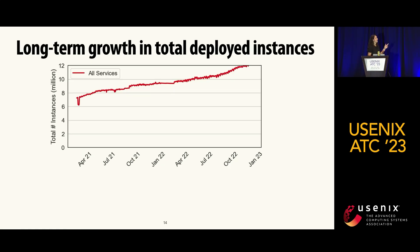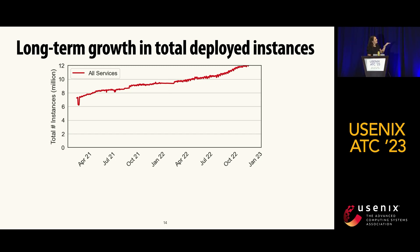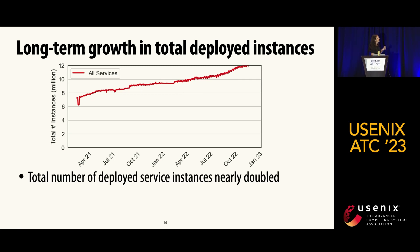The final topology finding is long-term growth in the total number of deployed instances. Same x-axis, but on the y-axis we have the total number of instances in millions, from zero to 12 million. We can see it almost doubles over the time range.